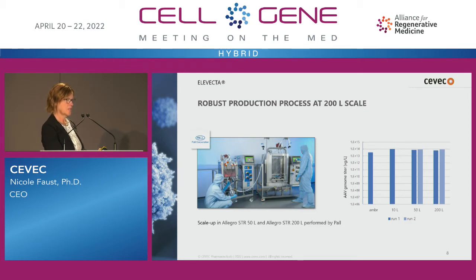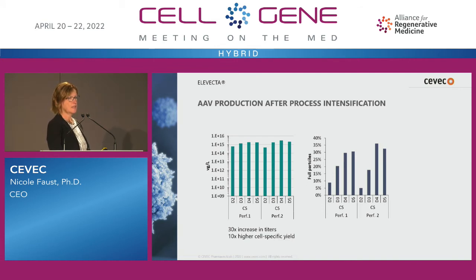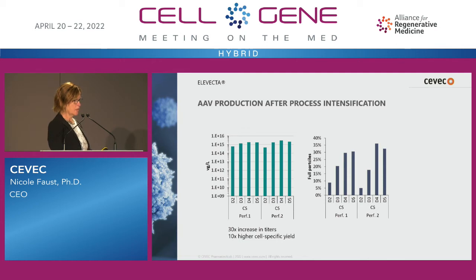Having the advantage of a stable cell line, we can pursue process intensification. We applied an ATF perfusion process to our proof-of-concept cell line, and in three independent runs we observed a 30-fold increase in titers in crude harvest — up to 3×10^15 vg per liter. This is not only due to higher cell numbers; we also see an approximately 10-fold increase in cell-specific productivity, which really boosts AAV productivity in our Elevector producer cells.